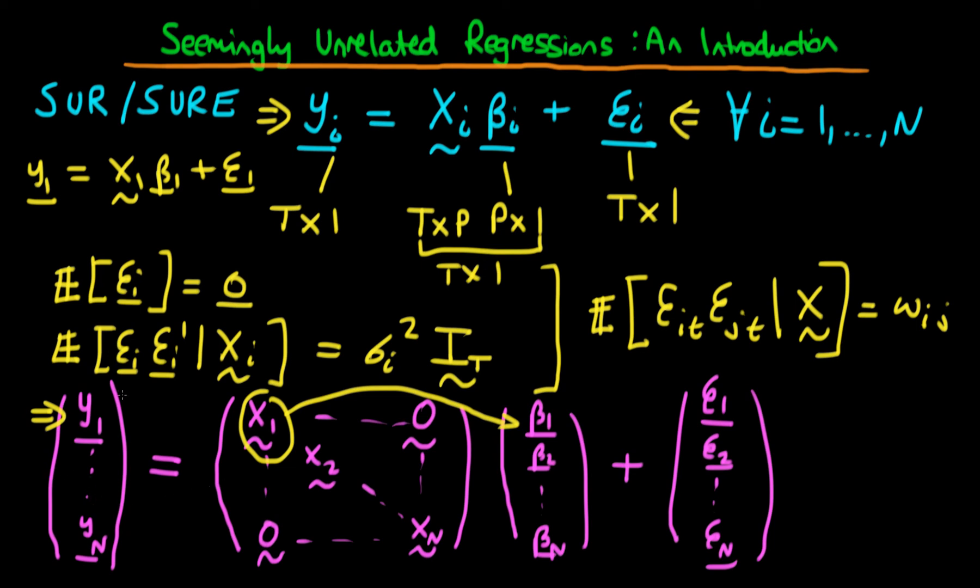The idea is that this left-hand vector now has dimensions NT by 1. This matrix has dimensions NT by NT. And this parameter vector here has dimensions NT by 1, such that when you multiply these two things together, you get an NT by 1 vector at the end.